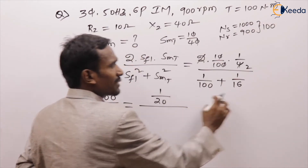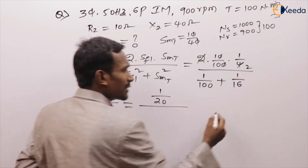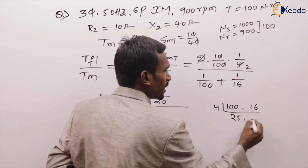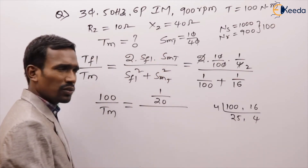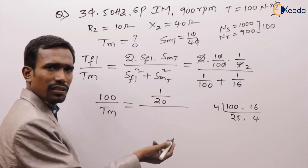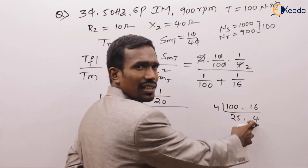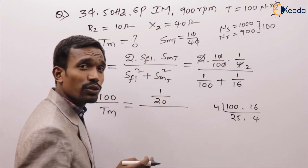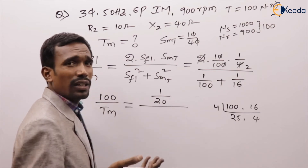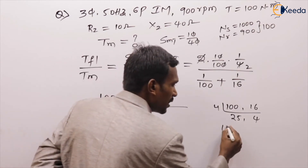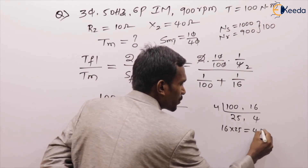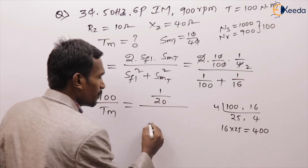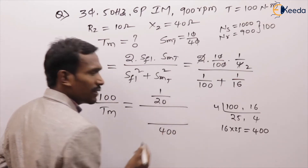LCM of 100 and 16 is 400. So 1/100 + 1/16 = 4/400 + 25/400 = 29/400. Therefore: 100 / T_max = (1/20) / (29/400) = 400/(20 × 29) = 20/29.